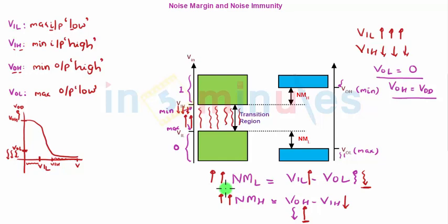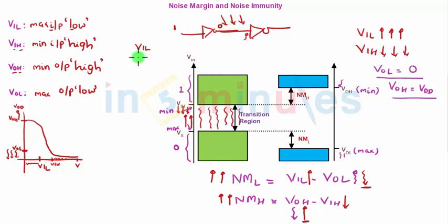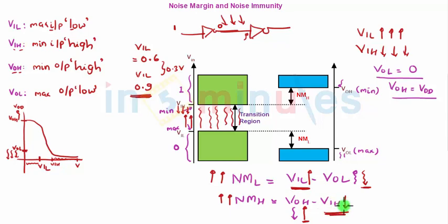So technically you want your noise margin to be high. For example, suppose this is an inverter driving another inverter and it's corrupted by noise — if the input here was zero and your VOL value was 0.6 and your VIL value was 0.9, a higher value of VIL will allow 0.3 volts of noise to be tolerated, because the signal can be corrupted up to 0.9V and still be interpreted as logic 0. Similarly, higher the value of VIL and lower the value of VIH, you have more room to interpret your input as logic 0 or logic 1, and the indeterminate zone becomes smaller.